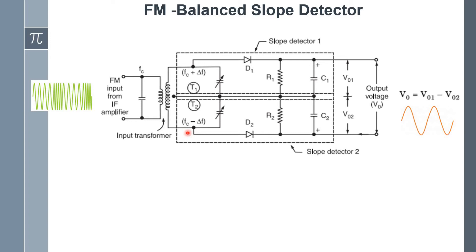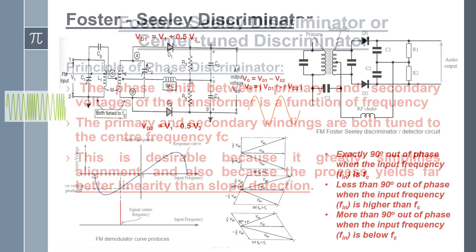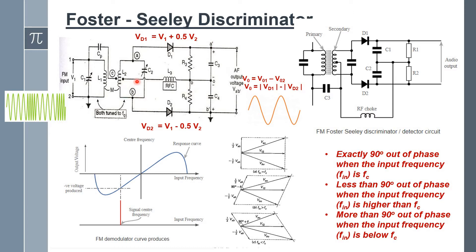Looking at the circuit diagram of the Foster-Seeley discriminator, we can identify the exact differences. Here only two tuned circuits are available, and both are tuned to fc — there is no fc plus Δf or fc minus Δf. The primary and secondary are both tuned to fc. Additionally, the primary side is directly connected to the secondary through the coupling capacitor Cp. This is the main modification made to improve linearity in the Foster-Seeley discriminator.